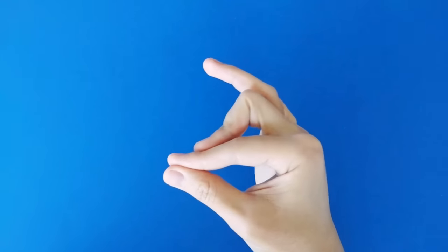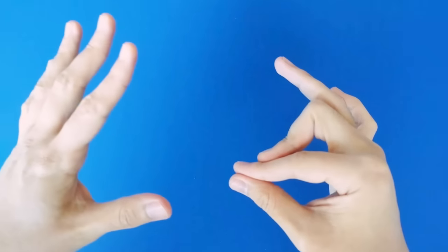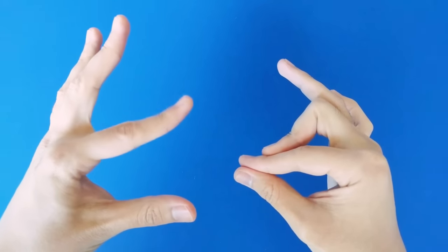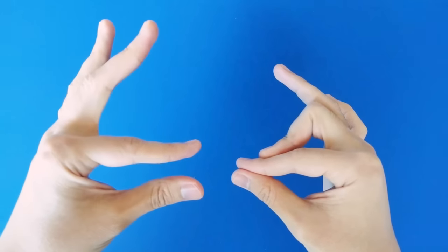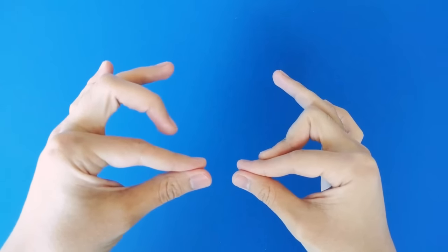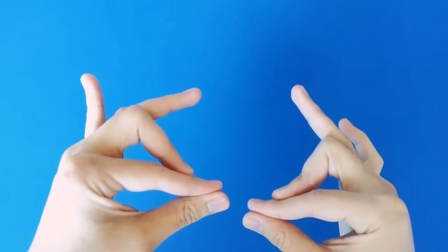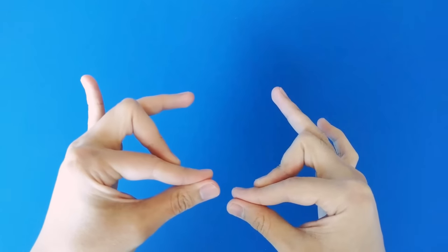Now you're gonna take your other hand and do the exact same thing. You're gonna take your index finger and your thumb, you're gonna pinch them together, and you're gonna take your middle finger and rest it on top of your index finger. And again, your ring finger and your pinky on that hand are going to be doing nothing.